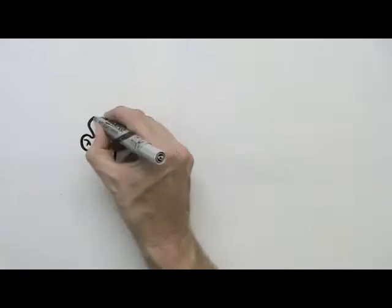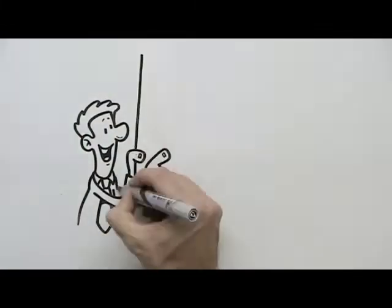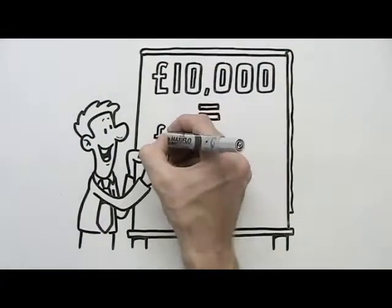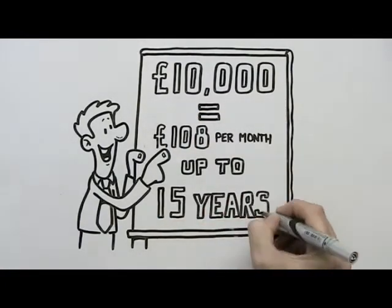The renewable energy system that they had installed cost £10,000 and they're paying the funding back at £108 a month for up to 15 years.